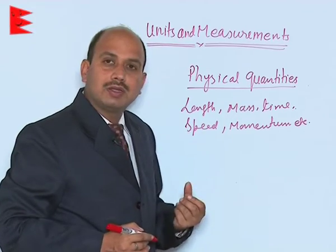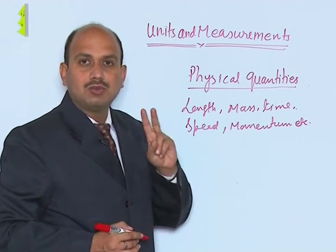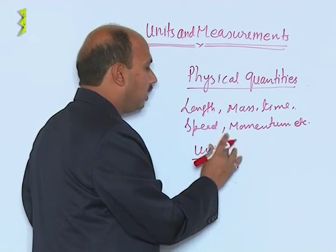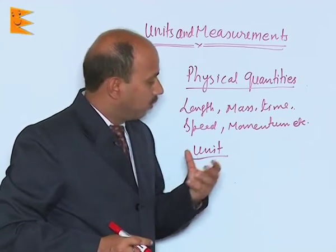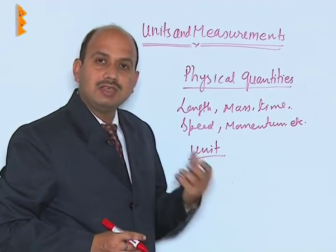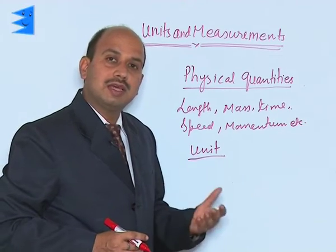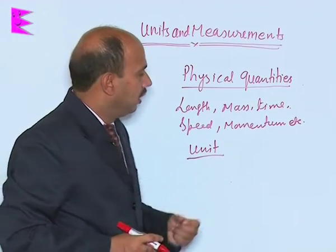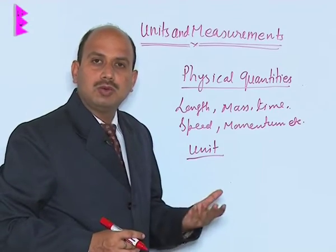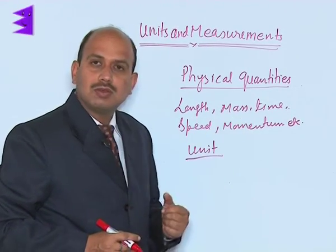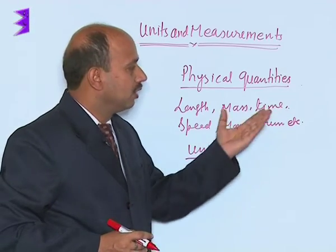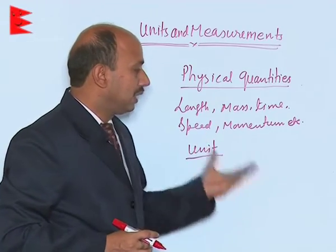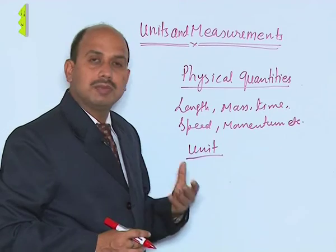For measuring a physical quantity, two things are required. The first one is the unit. For the standard of a measurement, a quantity is chosen which has the same nature as that of the quantity which has to be measured — this is known as a unit. For example, if you are going to measure length, we choose the unit meter. For mass, we choose kilograms. For time, we choose seconds. For speed, we choose meter per second. And for momentum, we choose kilogram meter per second.